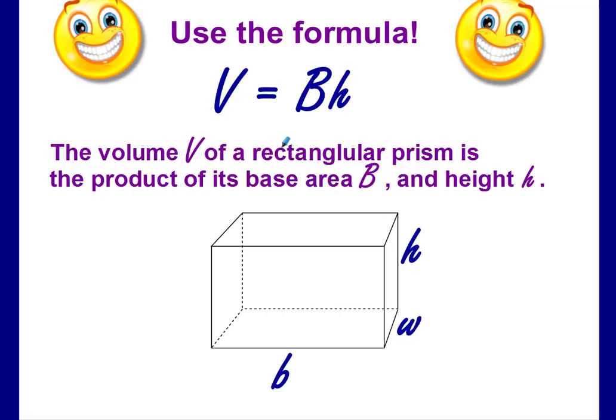So let's talk about the base area. It used to be volume, the formula for volume was length times width times height. Well now we're using the big B, which stands for base area. So you have to look at your prism and you have to look at the base. So here is our base. Our base is a rectangle. So we would use the formula for area of a rectangle to find our base area.